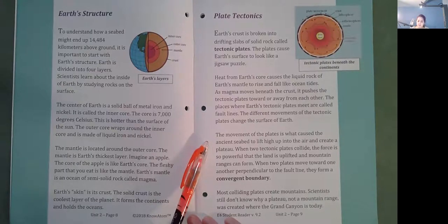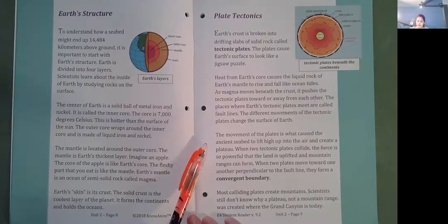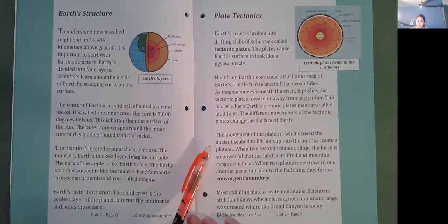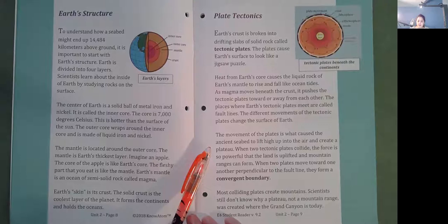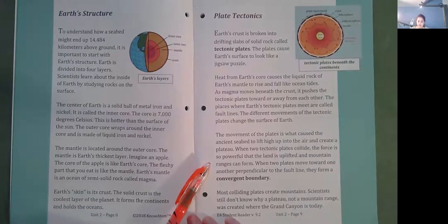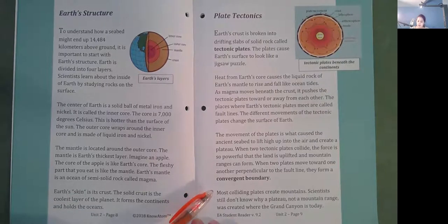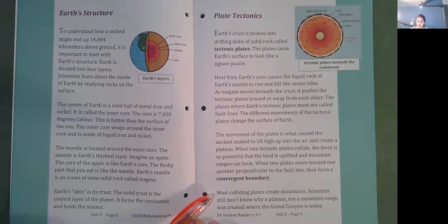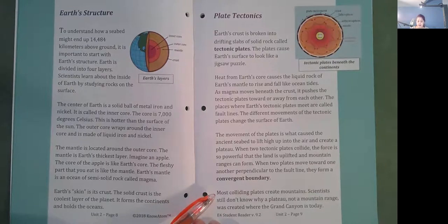When two tectonic plates collide, the force is so powerful that the land is uplifted and mountain ranges can form. When two plates move towards one another perpendicular to the fault line, they form a convergent boundary. Most colliding plates create mountains. Scientists still don't know why a plateau, not a mountain range, was created where the Grand Canyon is today.